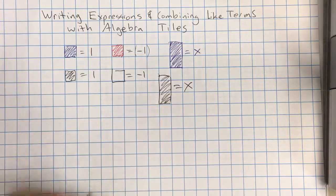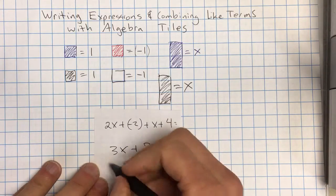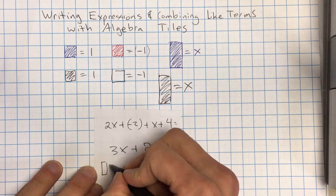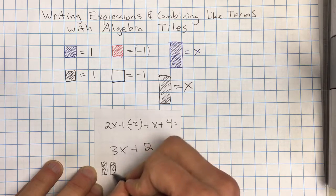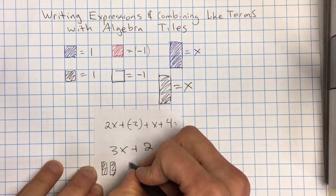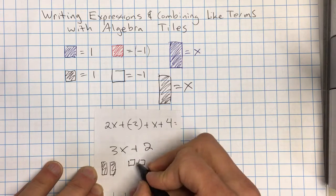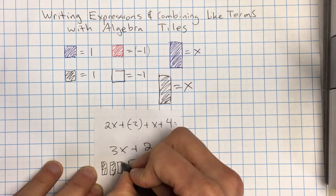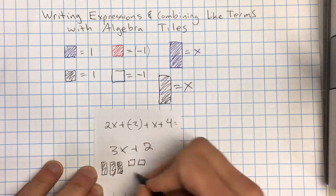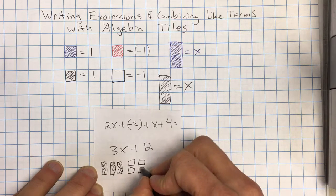And then finally, with the last one that we had here, we had a bunch of stuff going on. I have 2 x's plus negative 2. So I'm going to draw 2 of these. I'm going to leave a little space because I know I have more x's coming in. Plus another x plus positive 4. So we have 1, 2, 3, 4.